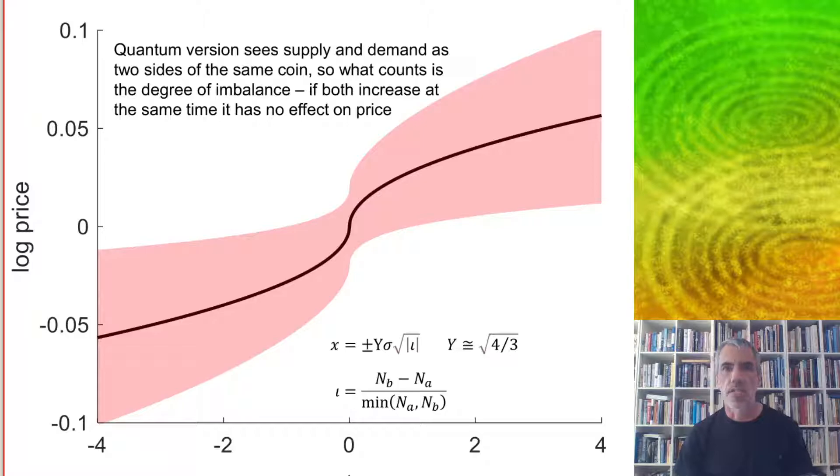The quantum version, in contrast, sees supply and demand as two sides of the same coin, so what counts is the degree of imbalance. If both increase at the same time, for example, it should have no effect on price, at least at first order.